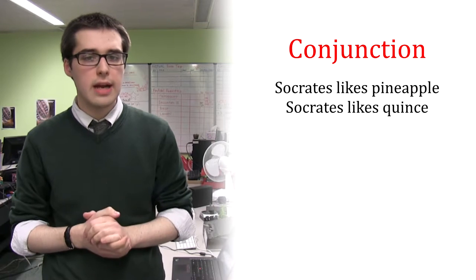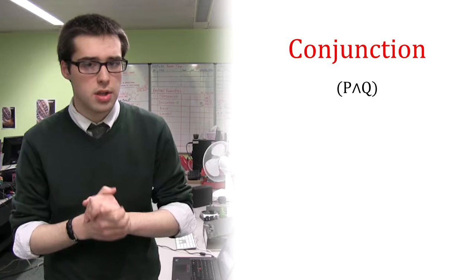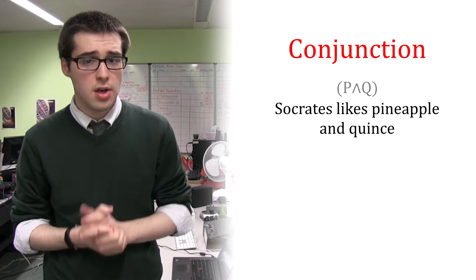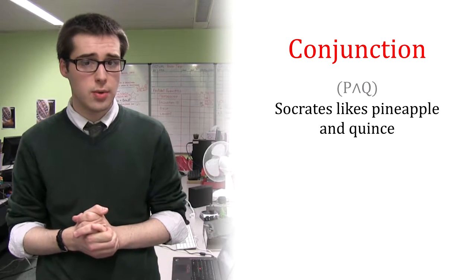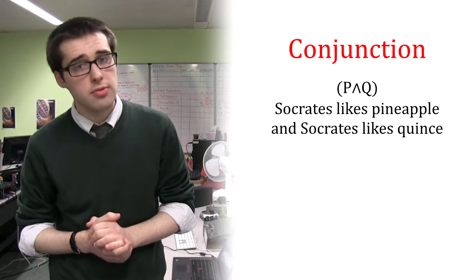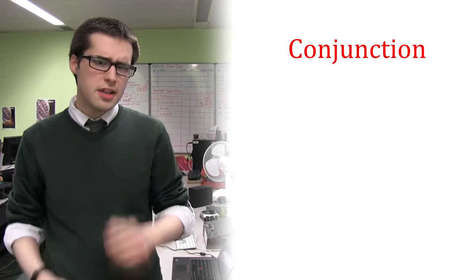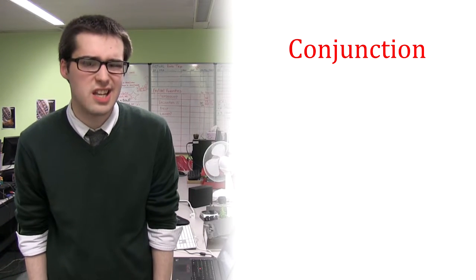Given the correct key, we can translate these propositions as P and Q. So, the natural language sentence Socrates likes pineapple and quince, when translated into formal logic, can be read Socrates likes pineapple and Socrates likes quince. A similar mistake can occur when translating lists.